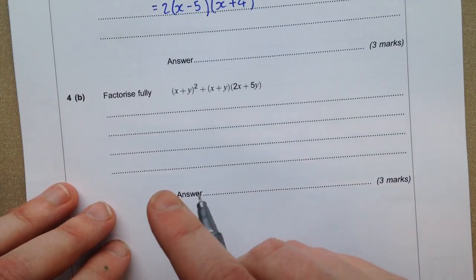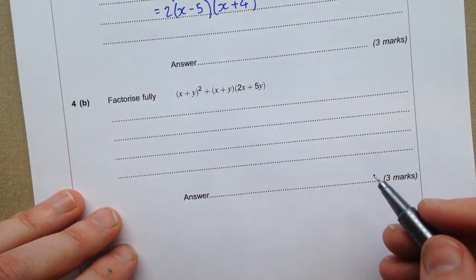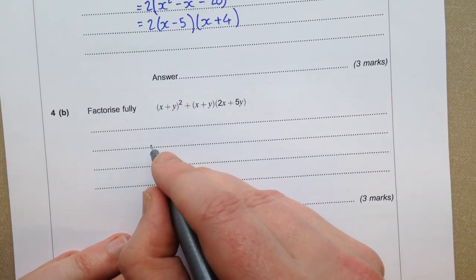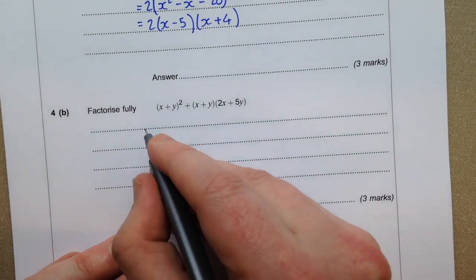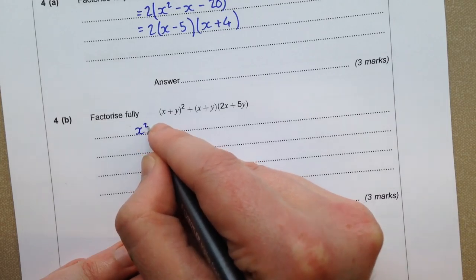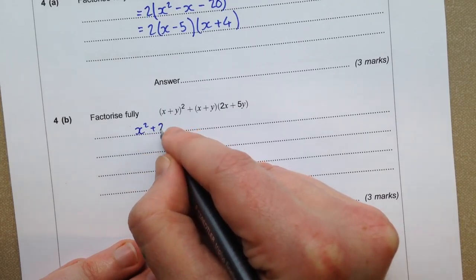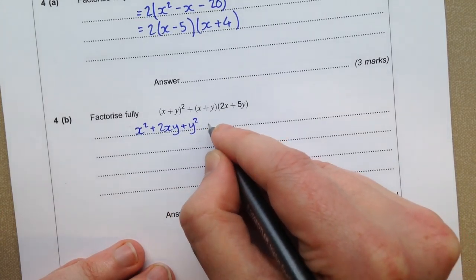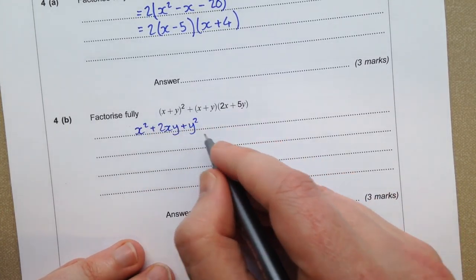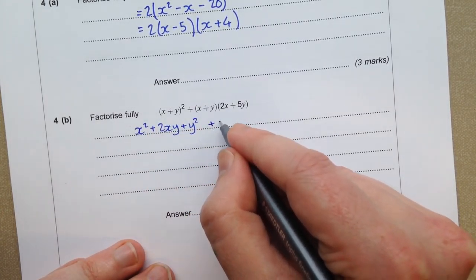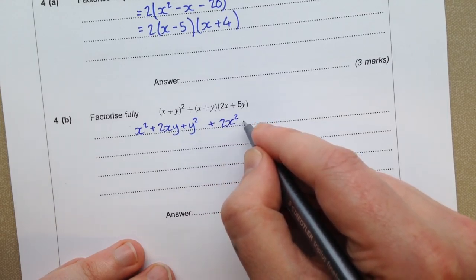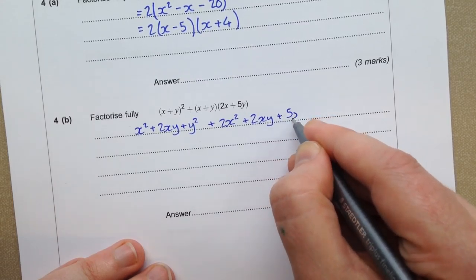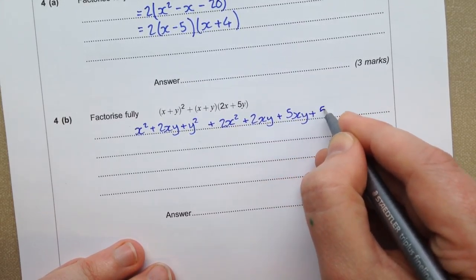Now the next one, factorised fully. So first of all we're going to have to do some multiplying out. So we can go x squared plus 2xy plus y squared. That's the left hand one. And the right hand one is 2x squared plus 2xy plus 5xy plus 5y squared.